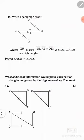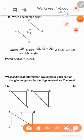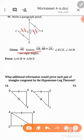Question 13 — write a paragraph proof. Given that AD bisects EB, we have two right triangles because of the right angle shown. The hypotenuse is congruent, and one leg EC is congruent to CB because AD bisects EB into two congruent segments.